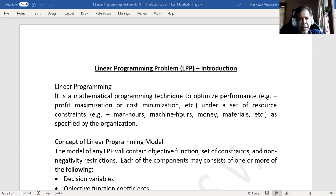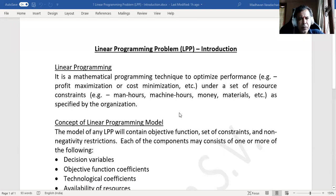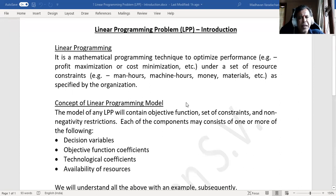When we talk about the concept of linear programming model, any LPP model, we call it as LPP shortly. Any LPP model will contain an objective function, a set of constraints, and non-negativity restrictions. So each of these components, this objective function may contain certain things, set of constraints may contain certain things, and non-negativity restrictions may also contain certain things.